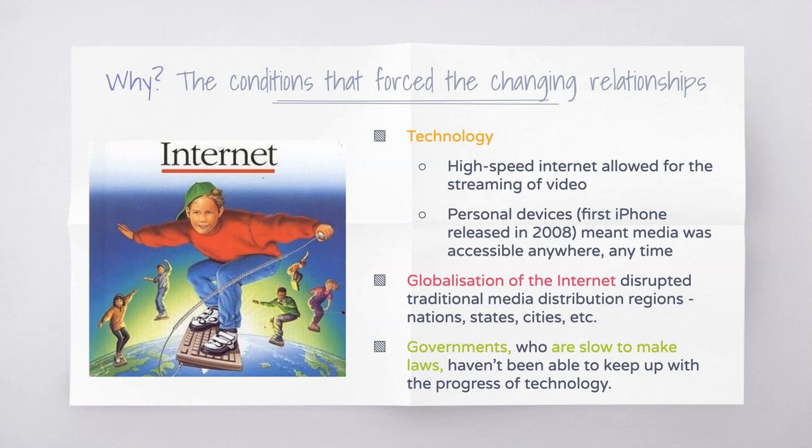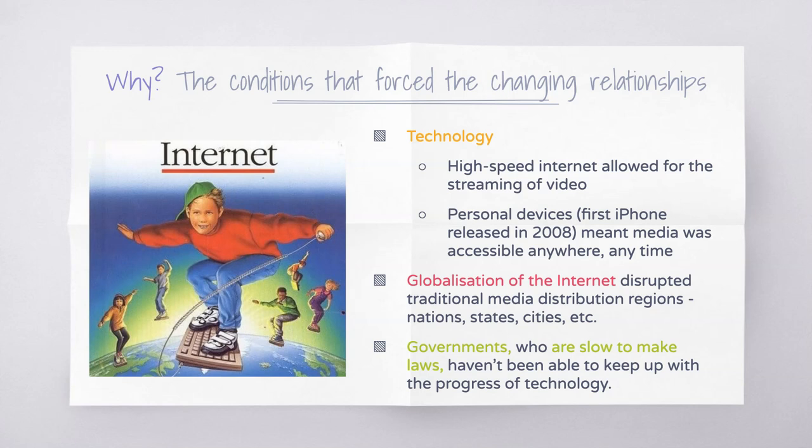How have things actually changed for these three stakeholders? Well, if we think about audiences traditionally, they had very little agency to interact with and respond to media messages — basically audiences could just consume. Now the role of the audience has undergone significant change. We play a controlling role in the media landscape. Not only do we have more agency to decide what we want to watch, when, and how, we are also participating in the media by creating things ourselves, commenting, and creating change.